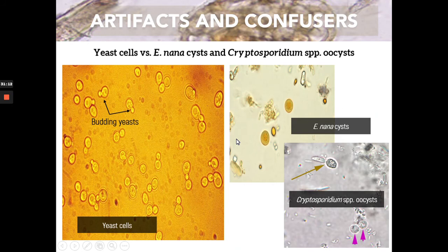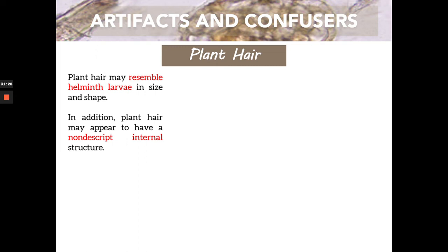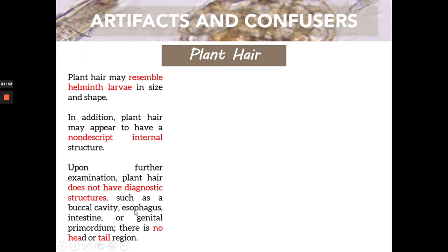Plant hair may resemble helminth larvae in shape. However, plant hair has a non-descript internal structure — it is not definite. Upon further examination, they do not have diagnostic structures like the buccal region, cavity, esophagus, genital primordium, or head and tail regions.